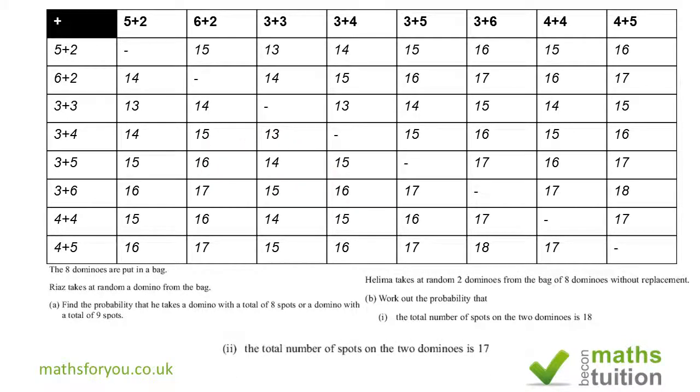Now for B2 we want to find the probability of picking two dominoes whose spots add up to 17. Now again, not forgetting that the outcomes in here is 56, we want to count our 17s. 1, 2, 3, 4, 5, 6, 7, 8, 9, 10, 11, 12, right. So we've got 12 in this total outcome of 56. So the probability of picking two dominoes whose spots add up to 17 is 12 over 56, as we had earlier.